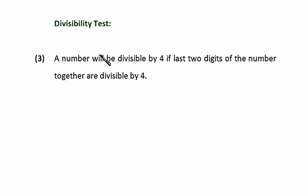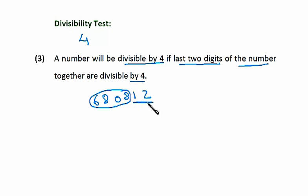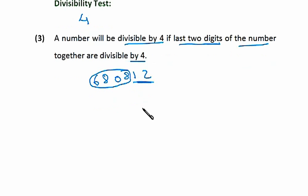Now friends, we will see the rule of the divisibility test of the number 4. A number will be divisible by 4 if the last two digits of that number together are divisible by 4. Suppose we have the number 680812. We don't need to look at the first four digits — all we have to look at is the last two digits, the units and tens. If those two digits as a number are divisible by 4, then the whole number is divisible by 4. So 12 — yes, it is divisible by 4: 4 × 3 = 12. So 680812 is divisible by 4.